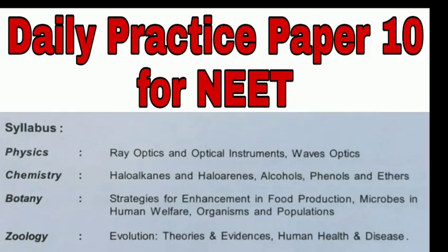Hello guys, welcome to Erudition Plus. Today is DPP 10 for NEET in Physics — it is Ray Optics, Optical Instruments, and Wave Optics, basically the whole optics. In Chemistry it is Haloalkanes and Haloarenes, Alcohols, Phenol and Ether. In Botany it is part of Ecology, and in Zoology it is Evolution and Human Health and Disease.